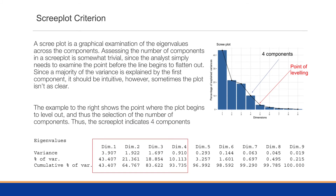In a scree plot examination, we look for where the point of leveling occurs. Drawing the scree plot from our solution, we see that by the fifth dimension it begins to level off with little difference between successive dimensions. We go one step before that point, yielding a determination of four components using this scree plot assessment.